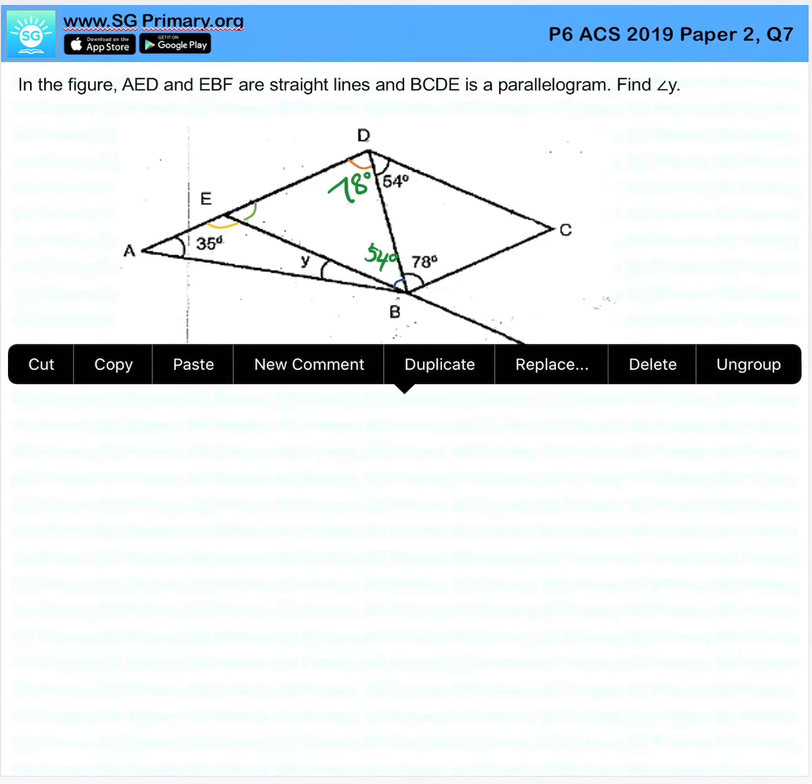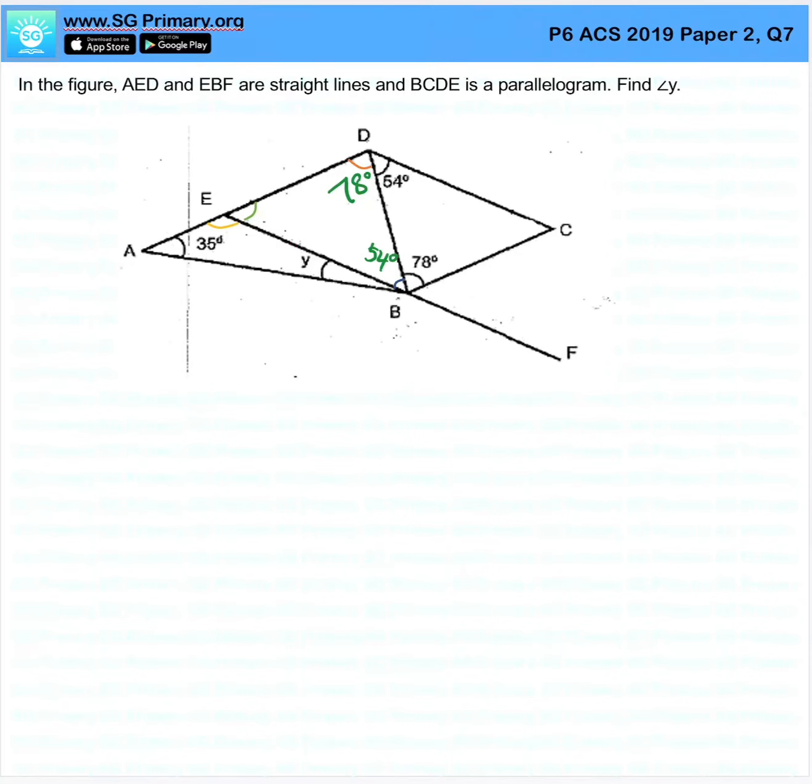So let's continue by finding this particular angle here, angle DEB. 180 minus 78 minus 54 will give us 48 degrees.